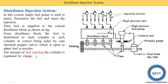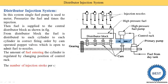The amount of fuel entering the cylinders is regulated by changing the position of the control rack. As you can see here, the control rack controls the amount of fuel delivered from the pump, which is then supplied through the distributor block.